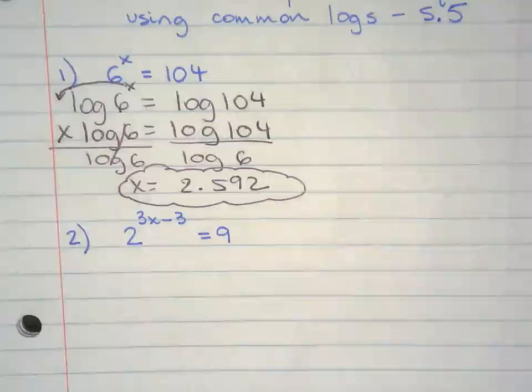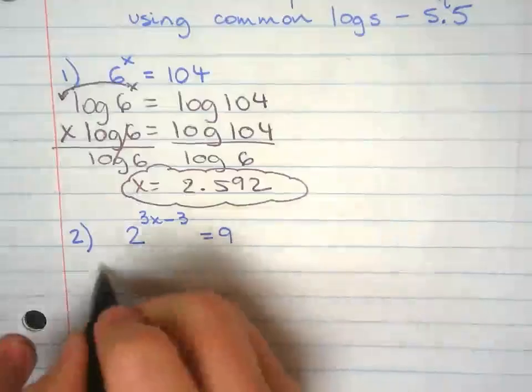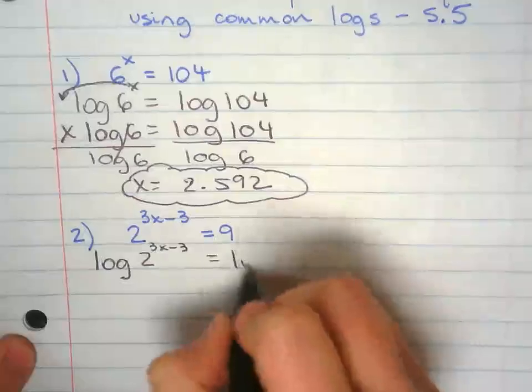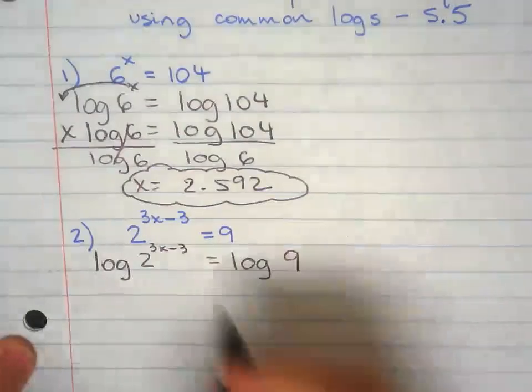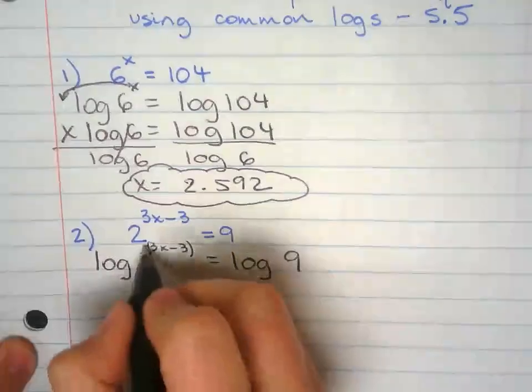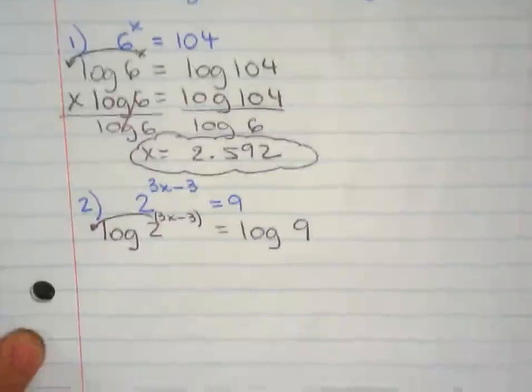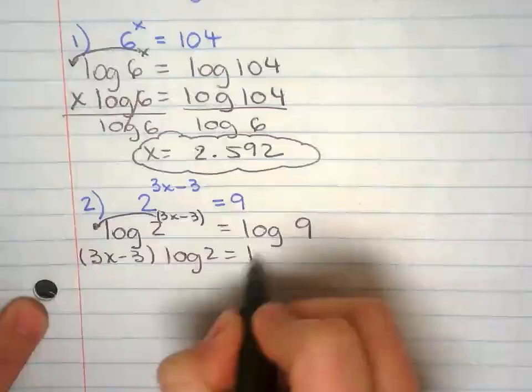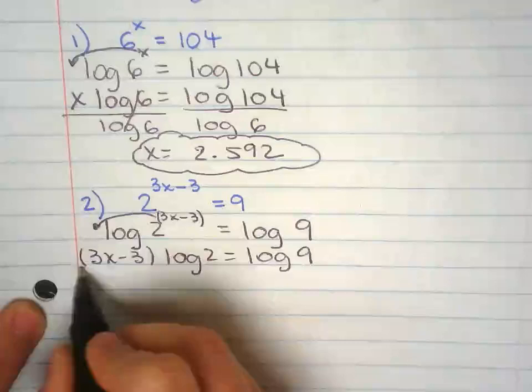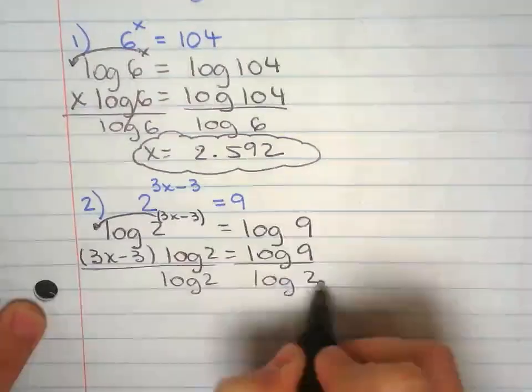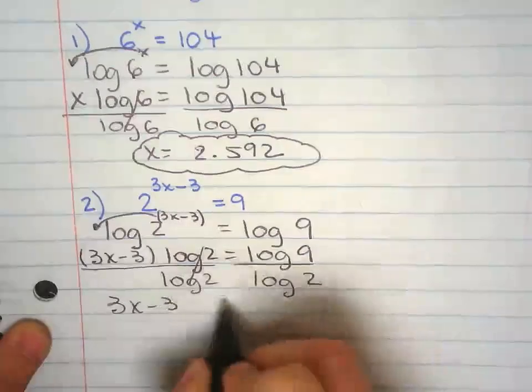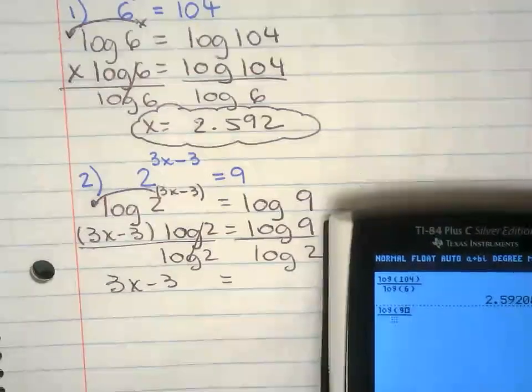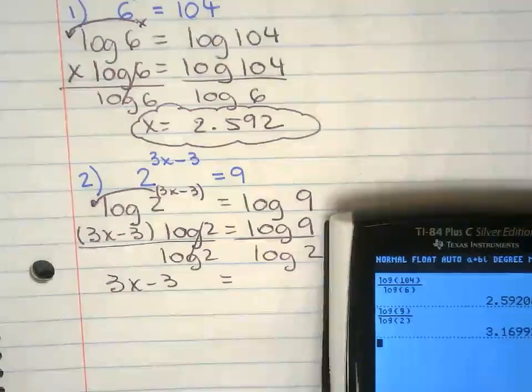So next one, we're going to follow the same idea. Log base 2, and then you got 3x minus 3 for the exponent, log of 9. Now, applying the power property again, the exponent is going to go in the front multiplying everybody. I'm just going to keep the parenthesis there just to keep me organized. Divided both sides by log of 2. Log of 9 by log of 2, keeping three decimals.